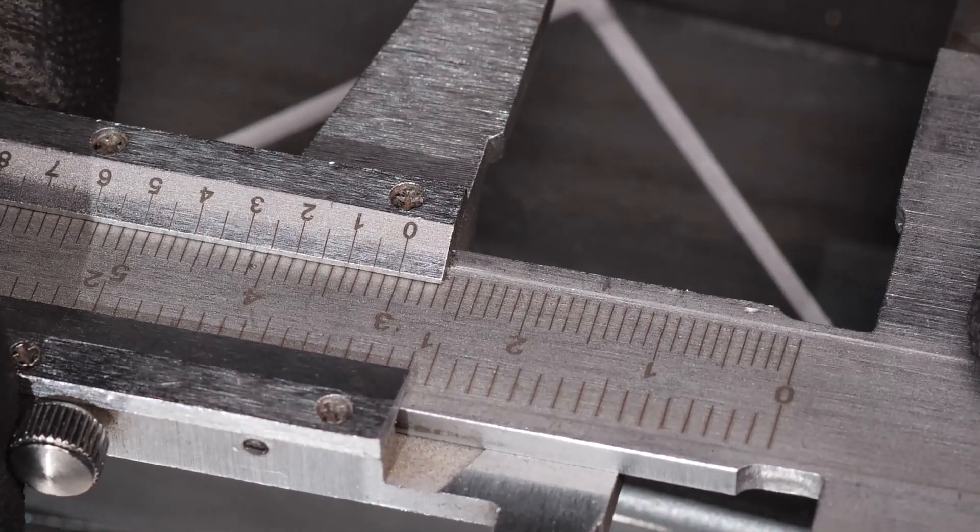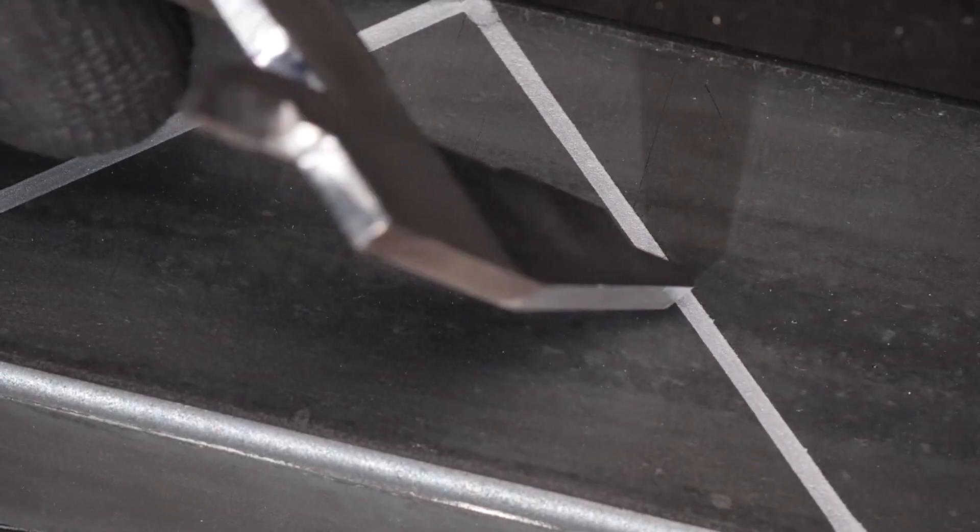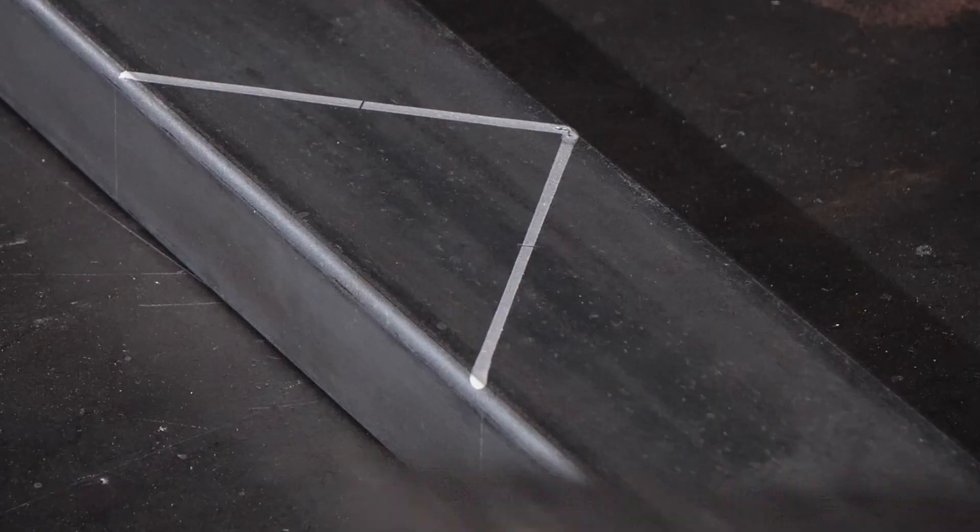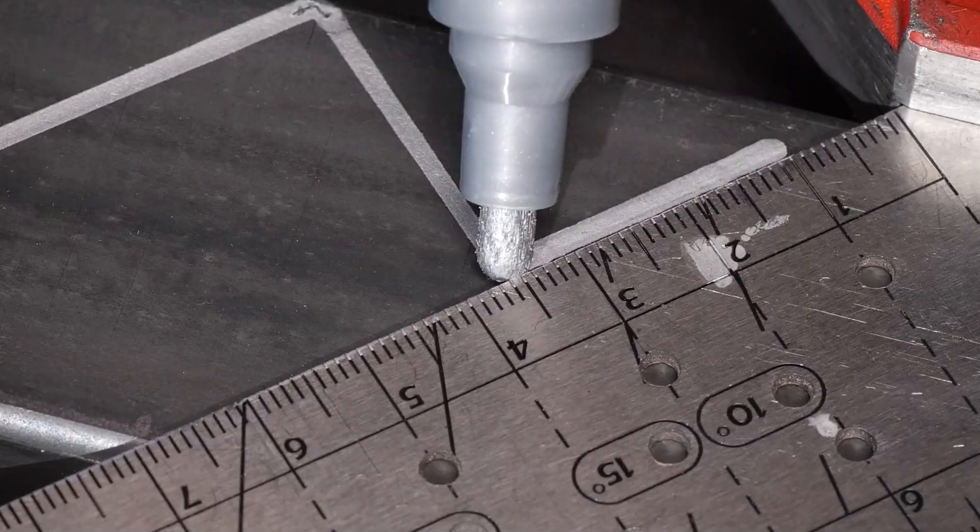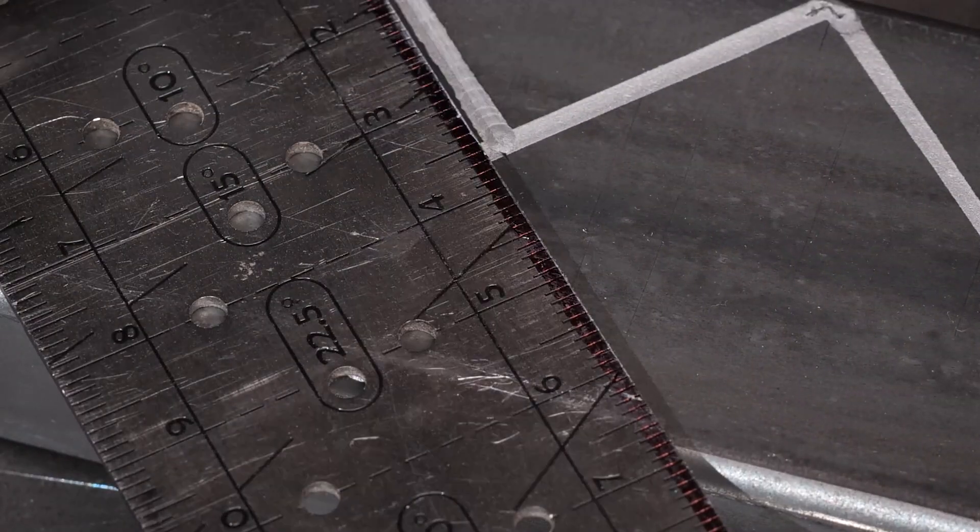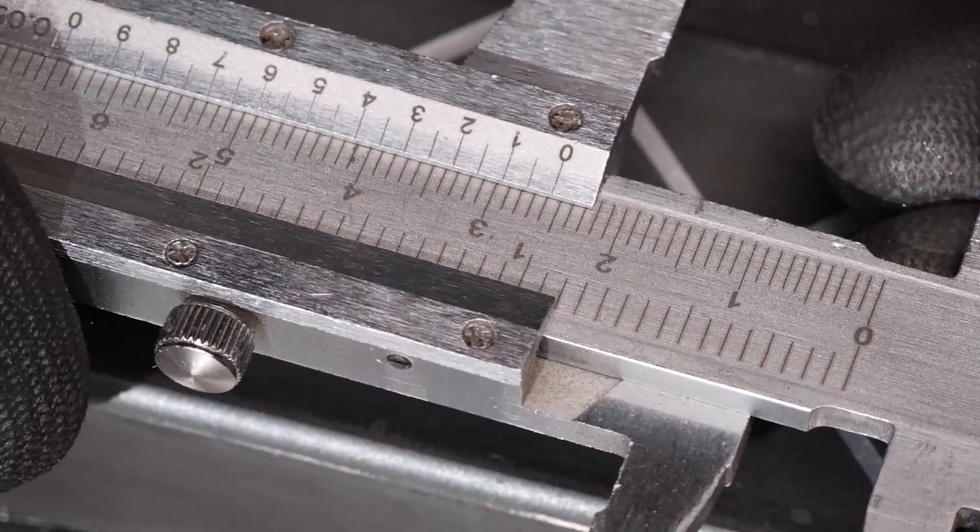Now, onto something a bit more complex. Connecting three cuboidal pipes. Marking the pipe with a rectangular cavity in mind is your starting point. Repeat this across the entire pipe, ensuring consistency.